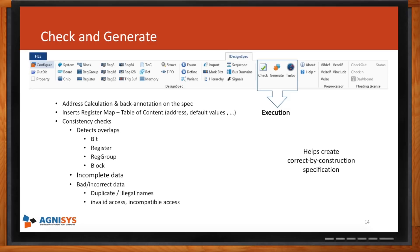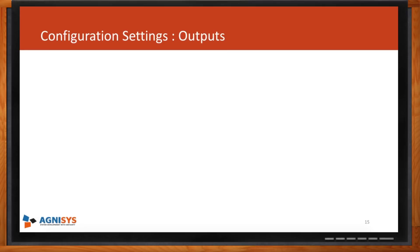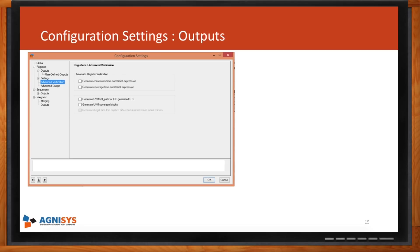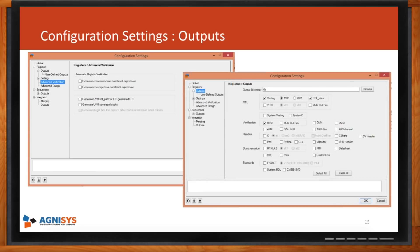The tool requires no learning curve — it's simple, you click on the register and enter the information. To choose what gets generated, you click Configure and select the outputs you want. Those settings are stored in the document itself, so you can send it to someone who doesn't have the tool and they can still open it as a normal Word document.